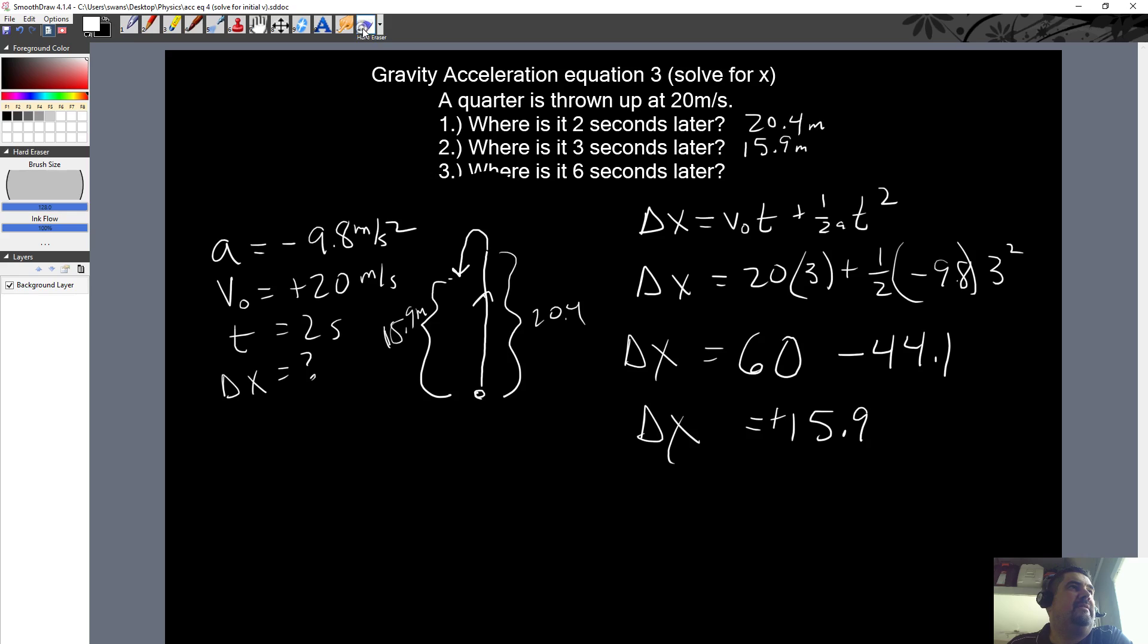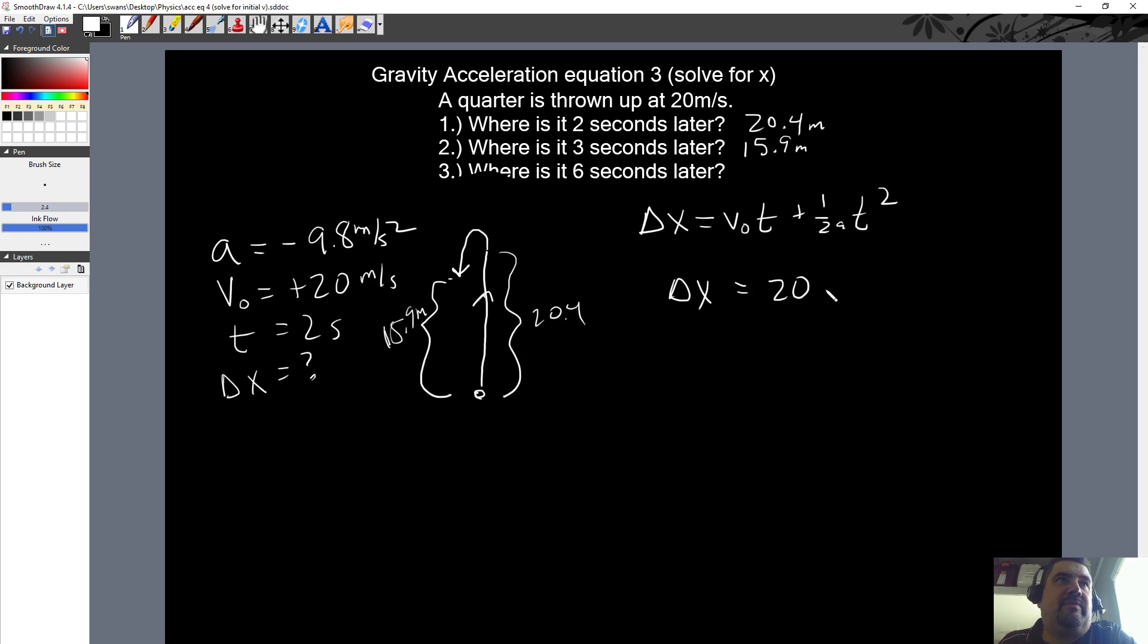And let's do the last one. And the last one is six seconds later. I did that on purpose because I wanted to show you where it might be. Where would it be six seconds if you waited? If you could wait six seconds, where would it be? Let's do this. Delta X is equal to initial speed was 20. They threw it up at 20. You wait six seconds. And six seconds squared, six times six is 36, right?